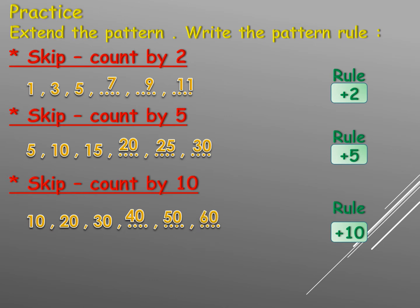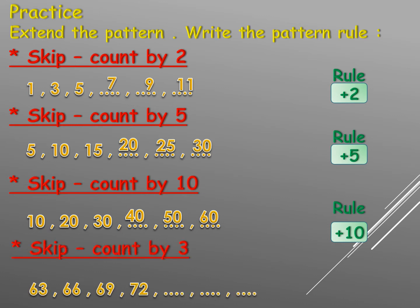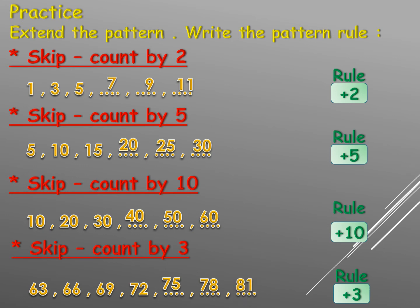Skip counting by three: sixty-three, sixty-six, sixty-nine, seventy-two. The rule is plus three, because the difference between sixty-three and sixty-six is three. So: seventy-two plus three equals seventy-five, seventy-five plus three equals seventy-eight, seventy-eight plus three equals eighty-one.